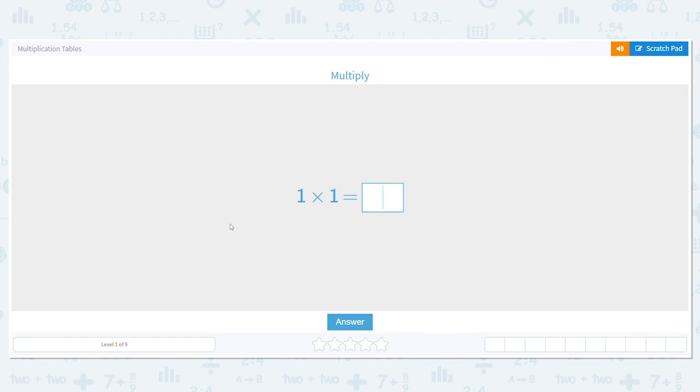Our first fact is 1 times 1. Any number times 1 is going to equal the other number. So in this case, the other number is 1.